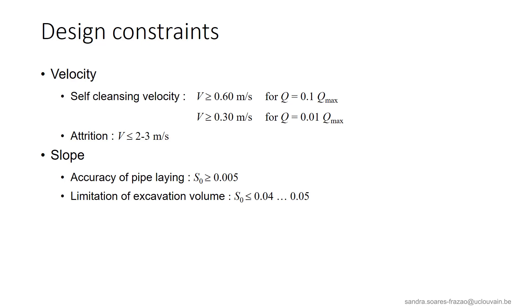There are also some constraints on the slope. If it is too small, it will be impossible to install the pipe with a sufficient accuracy. But if it is too large, it might induce excessive excavation costs. Then, a minimum diameter is required to avoid obstruction by larger objects that might end up in the pipe.